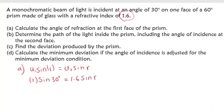Sine R equals sine 30 — which is 0.5 — divided by 1.6. Taking the sine inverse of that value gives us 18.2 degrees. So our angle of refraction R for part A is 18.2 degrees. We have found the angle of refraction at the first face.